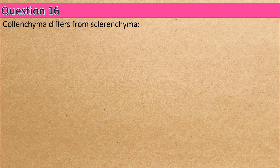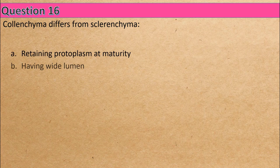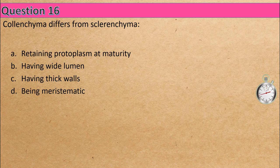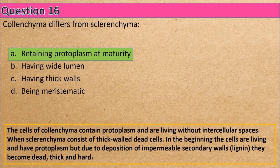Question 16: Collenchyma differs from sclerenchyma in — Option A: retaining protoplasm at maturity, Option B: having wide lumen, Option C: having thick walls, Option D: being meristematic. The correct answer is Option A: retaining protoplasm at maturity.